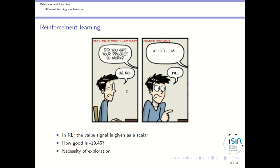You still have the same situation, but instead of some negative signal, you get some scalar value. And then you have to figure out what's the meaning of this scalar value. Is minus 10 good or bad? To figure out whether minus 10 is good or bad, you have to try something else. And if you try something else and you get plus 20, probably minus 10 was very bad. But if you try something else and you get minus 100, probably minus 10 was not so bad.